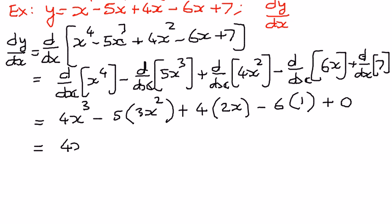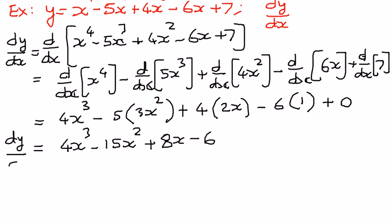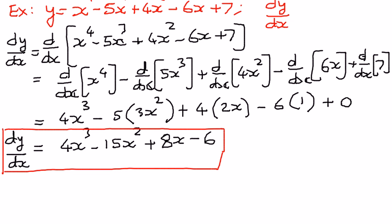So we have differentiated successfully. Simplifying: 4x to the power of 3 minus 5 times 3 is 15x squared, plus 4 times 2 is 8x, minus 6 times 1 is 6. So dy by dx equals 4x³ minus 15x² plus 8x minus 6. This is our answer, and we put a box around it.